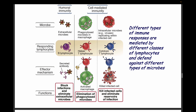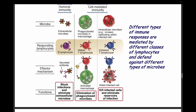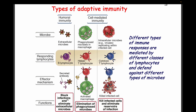There are two types of adaptive immunity: humoral immunity and cell-mediated immunity. Humoral immunity involves B cells. When an extracellular microbe enters the body, the B cells respond by producing antibodies. These antibodies attach to the pathogen, block infection, and eliminate the extracellular microbes. Cell-mediated immunity can target extracellular or intracellular pathogens, but is primarily for intracellular pathogens.